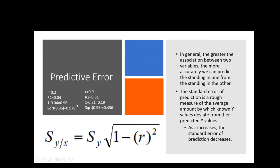These numbers can be confusing because we're dealing with fractions — when you square fractions they get smaller, and when you square root them they get bigger. So taking 0.19 and square-rooting it gives 0.436, almost one half. I multiply that fraction times the standard deviation of y, which means if I know your exam 2 score, the variability in predicting your exam 3 score is smaller because I now know something useful about you. The error rate is reduced by multiplying the standard deviation of y by that fraction.